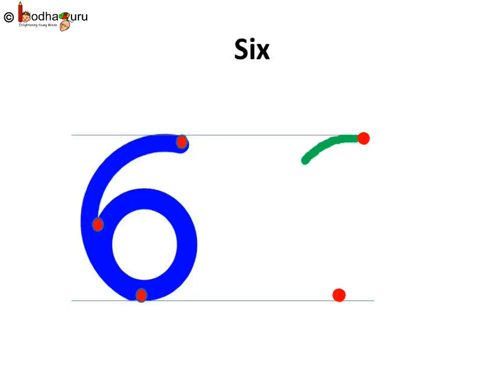So, 6 is a curve, the forward one, then again a small curve, the backward one, that is facing back. Look! The number 6 is ready.